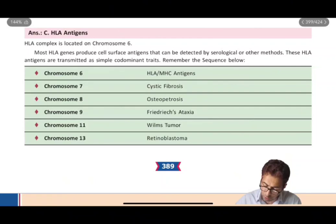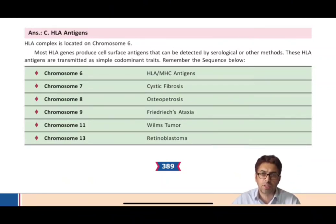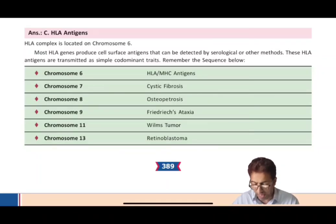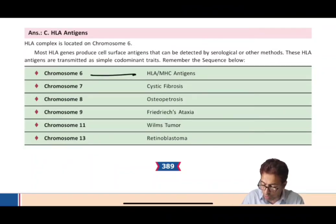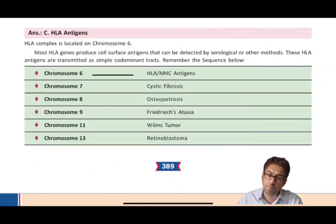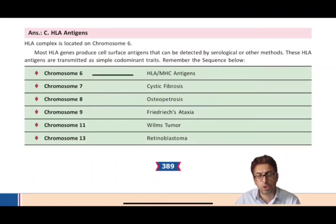I have produced a table showing in linear sequence chromosomes 6, 7, 8, 9, 11, and 13, which are very important, along with the diseases linked to them. From the table you can see that chromosome 6 is associated with HLA or MHC antigens — very important. This is a question that has been repeated multiple times both in NEET-PG as well as FMG examinations.